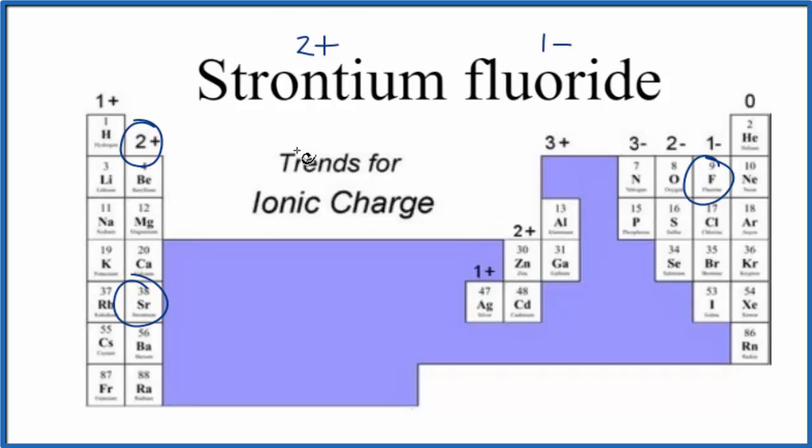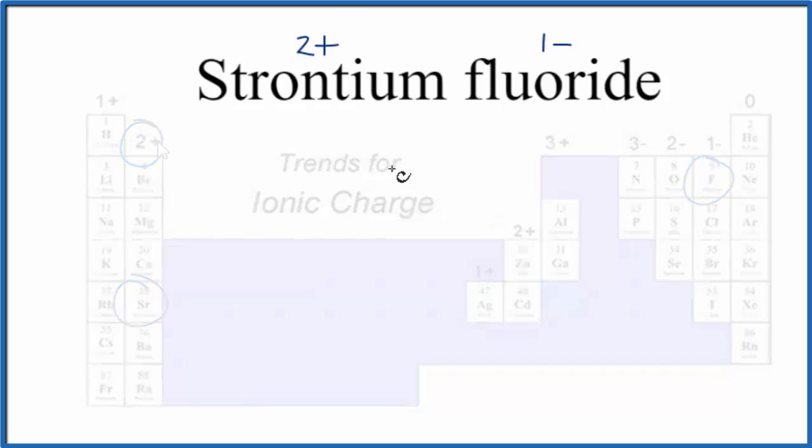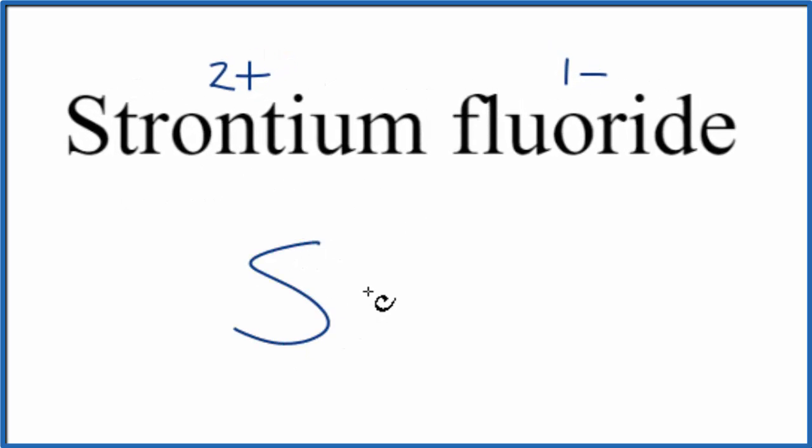So now we know the charges, and since we have an ionic compound, we have to make these charges balance. So we'll write the element symbol for strontium, that's just Sr, and then the fluoride ion, fluorine, is F.